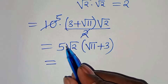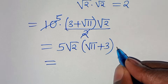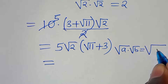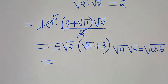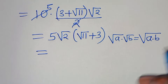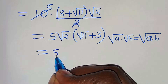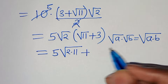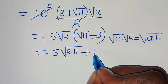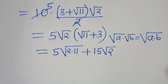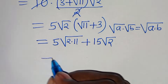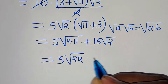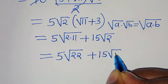Now, square root of 2 times square root of 11 is in the form square root of a times square root of b, which equals square root of a times b. Applying this property, we get 5 times square root of 22, plus 5 times 3 times square root of 2, which is 15 square root of 2. So the final answer is 5 square root of 22 plus 15 square root of 2.